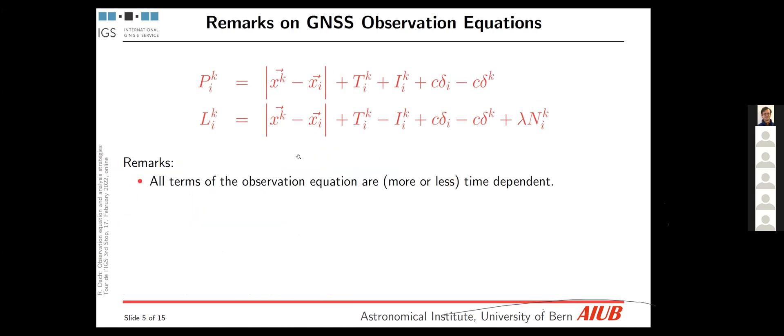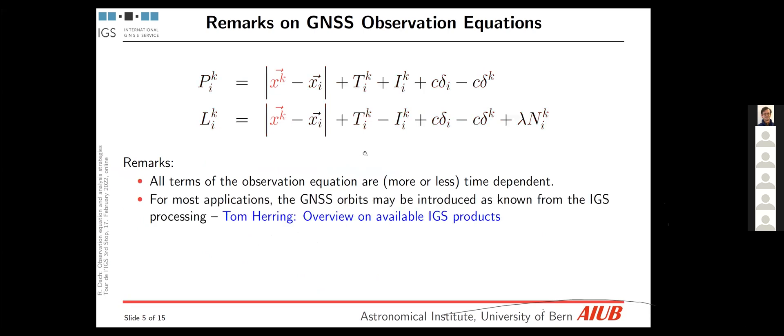First of all, we should mention that most of the terms are time dependent, starting from the very quick satellites with four kilometers per second down to a more relaxed velocity thanks to the deformation of the earth crust for the station positions and for all the terms, something in between. For many applications, you may assume that you can use the orbits from the IGS. And that's why the first presentation will come from the analysis center coordinator, Tom Herring, that introduces you to the available IGS products that you can use for several purposes.